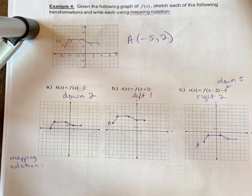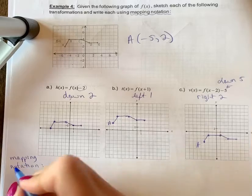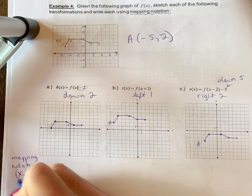Mapping notation is a way to write the coordinates for x and y and include the transformation.